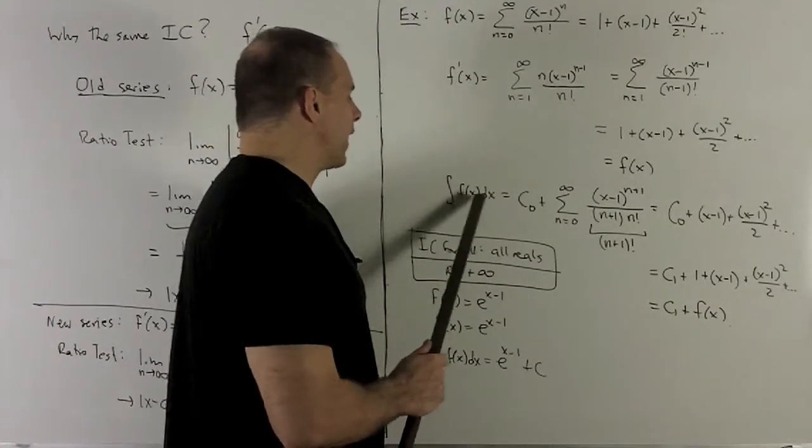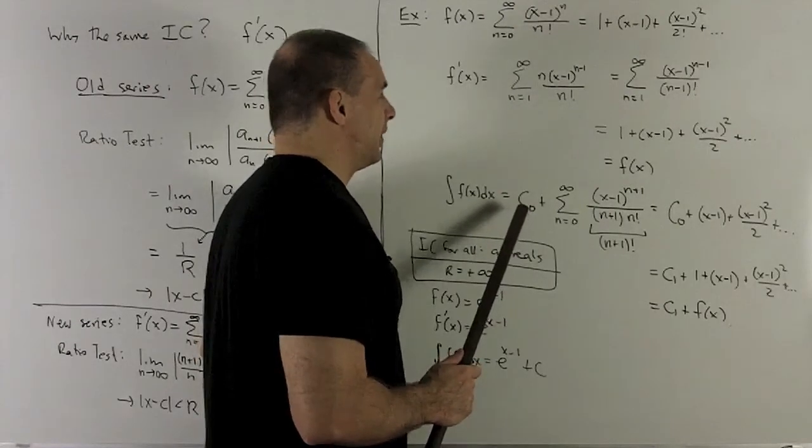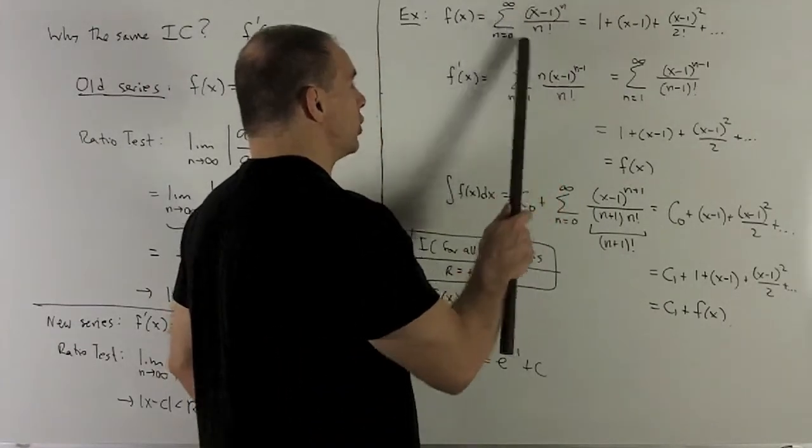So do the antiderivative of f(x), what do we get? Rule says, put in your constant of integration, and then what are we going to do? We're going to look at our original up here.